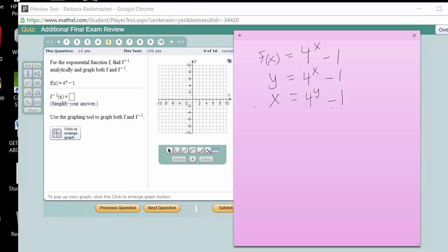The first thing I'll do is add 1 to both sides of this equation. So over here on the left we'll have x plus 1 equals 4 to the y.